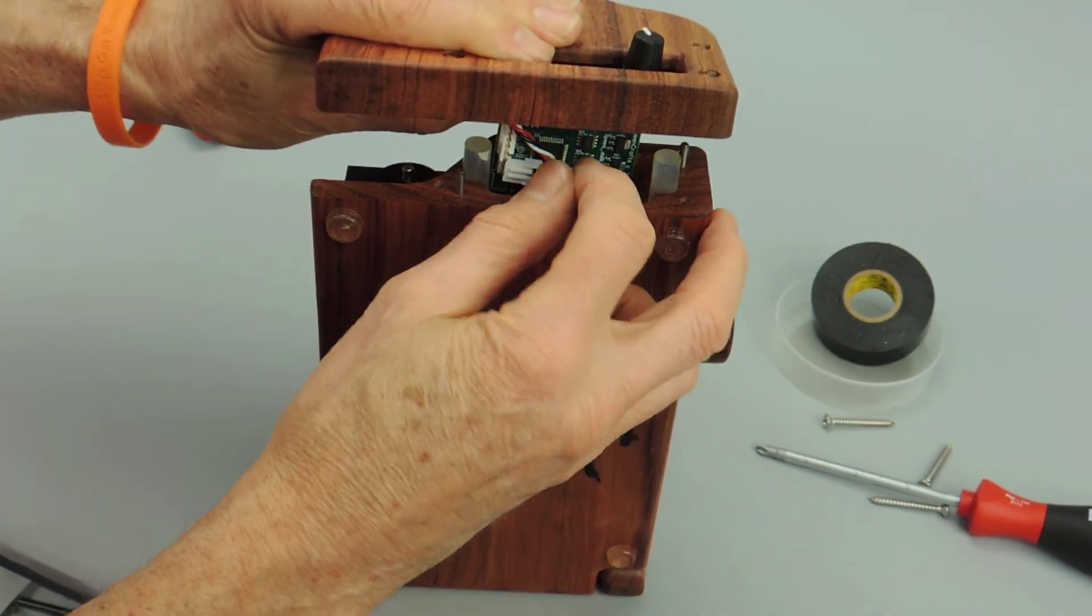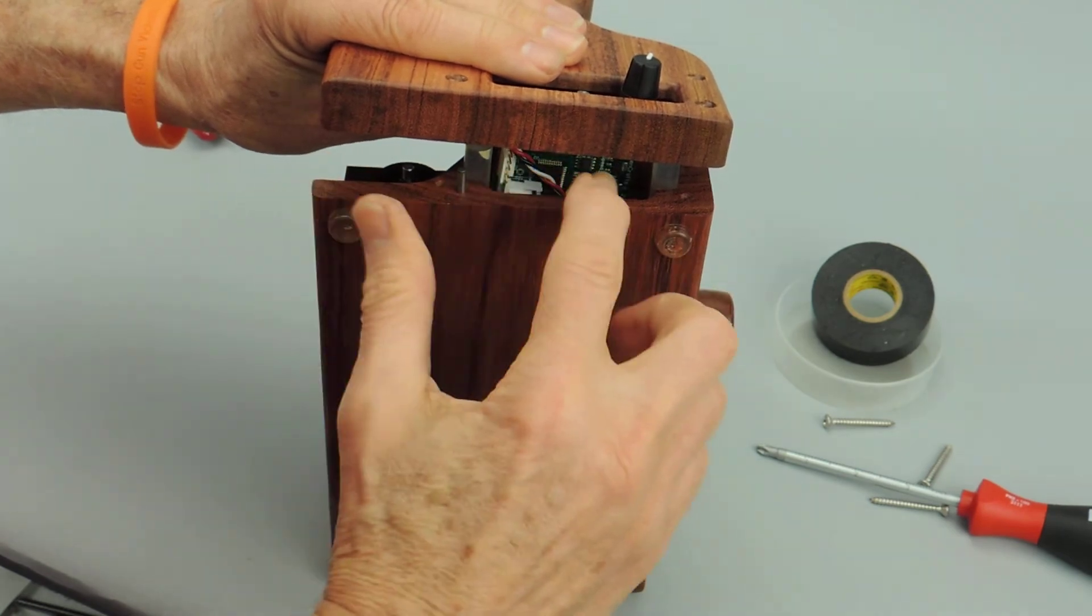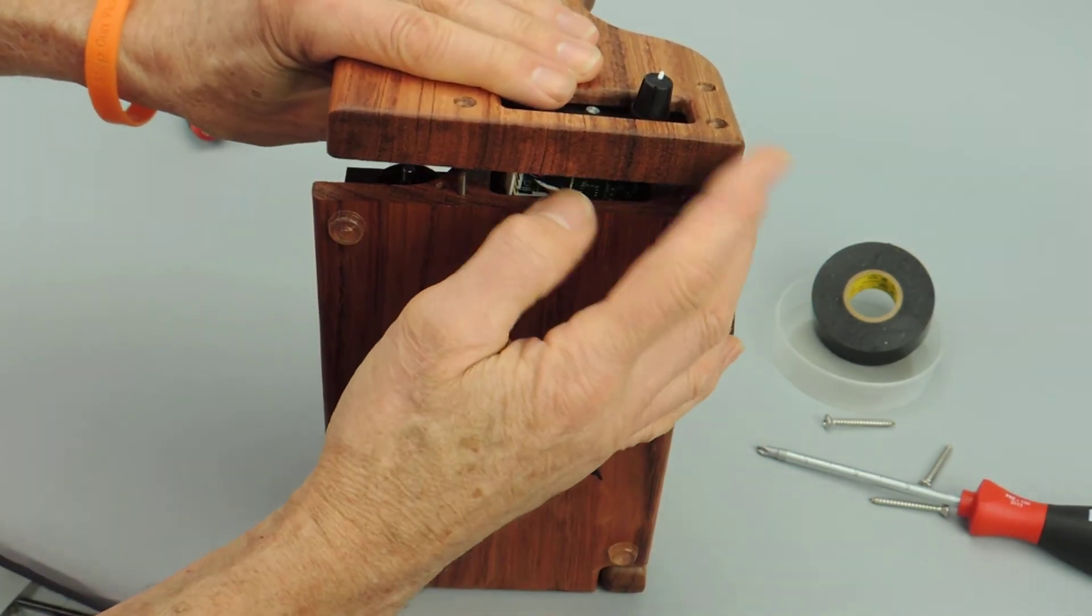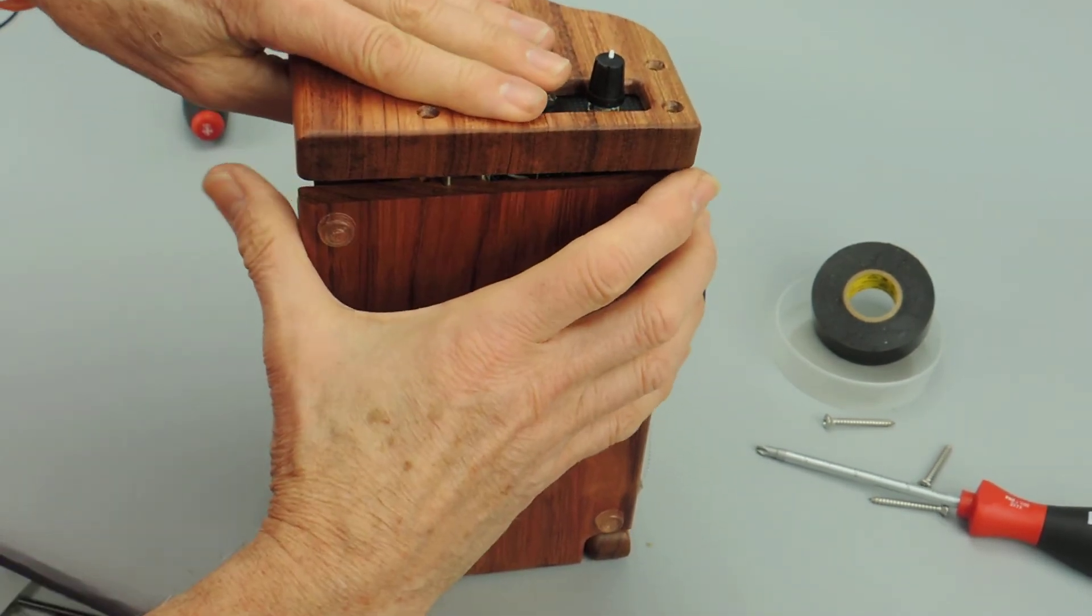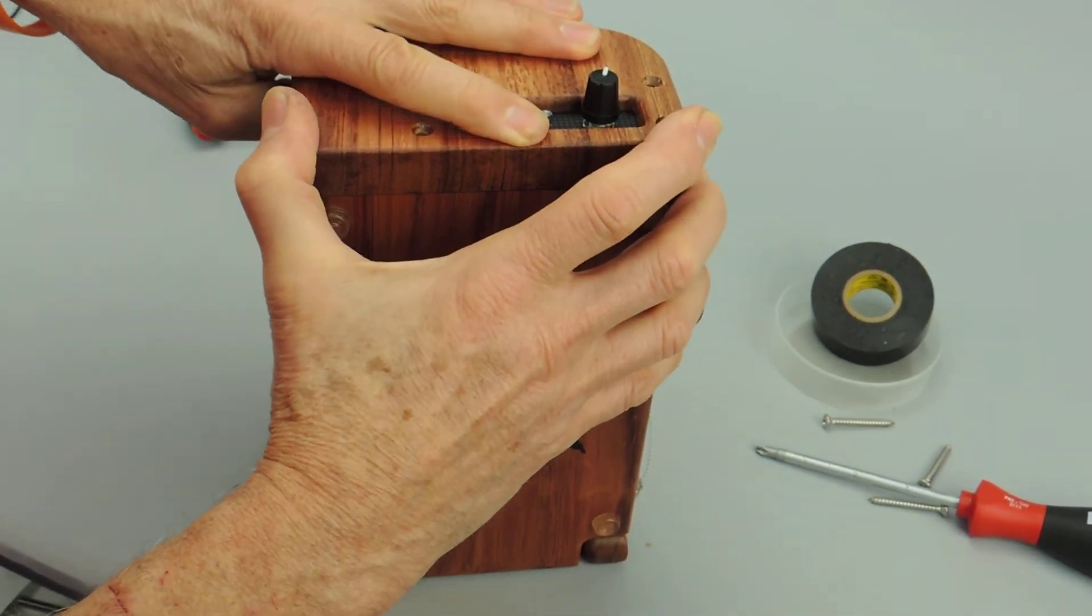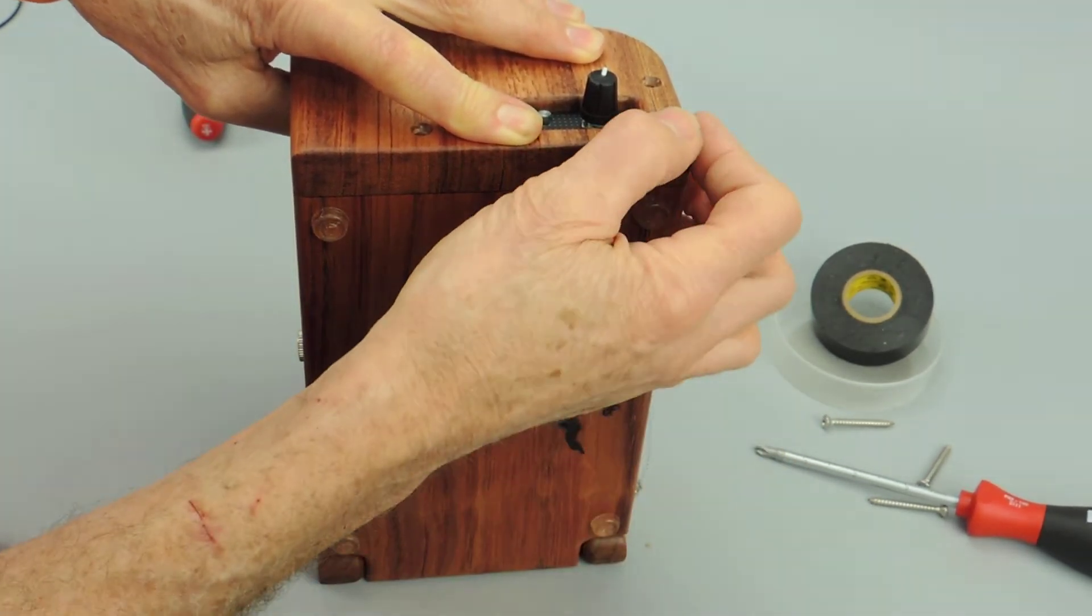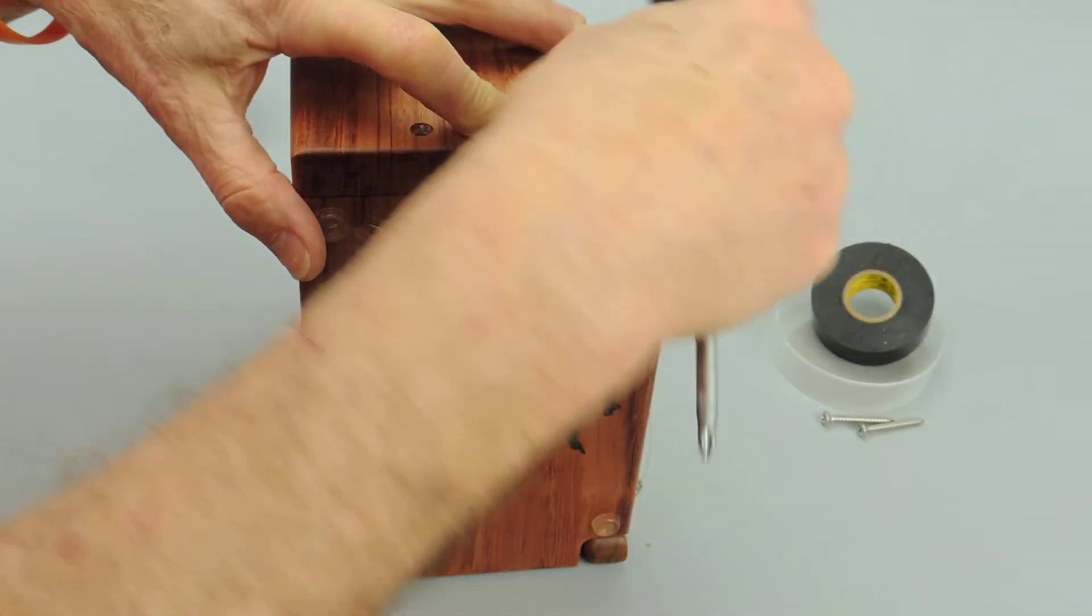So now the whole works goes back together. Be certain that no wires are caught between the face and the base. You may have to wiggle it a little bit so that everything lines up. Push it down on the pins. Make certain that the face goes down tight against the base, that there aren't any wires caught in between the two.